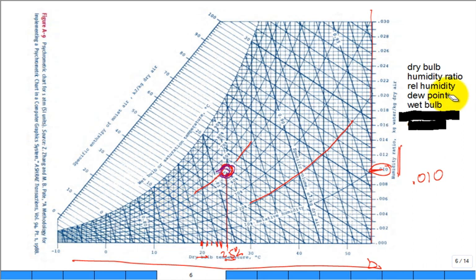The wet bulb is the next temperature, and it's along these sloped lines — that's going to be a constant enthalpy line. You project up until you get to that point and then read off the temperature for the wet bulb. For 25°C at 50% relative humidity, what is the wet bulb temperature? Around 16–17°C.